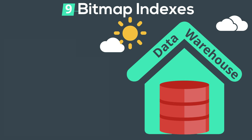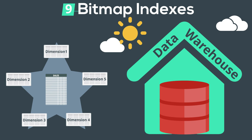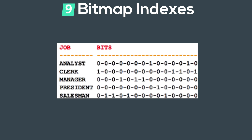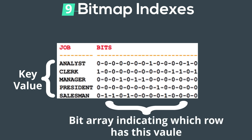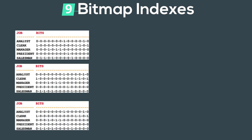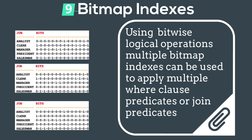The final access method is bitmap index access, which is typically more common in a data warehouse, especially with a star schema. Bitmap indexes store a key value and a mapping function that converts each bit in that key into a row ID. Bitmap indexes can be ANDed and ORed together based on your where clause predicates to produce a final set of row IDs, so you only go to the table once and apply this combined bitmap to extract the rows that satisfy multiple joins in a particular query.